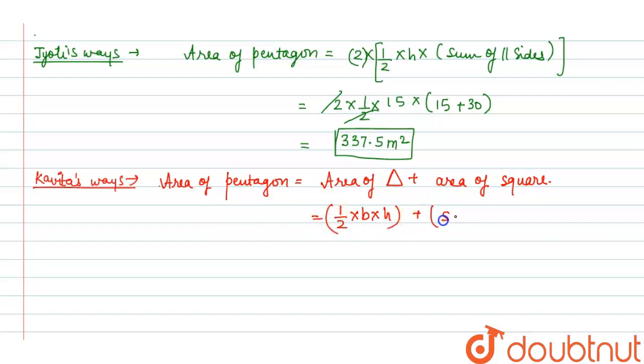Plus area of square is side × side. Now put the values: (1/2) × height is 15 × base is 15, and area of square is 15 × 15. When we are solving it, we get 337.5 meter square.